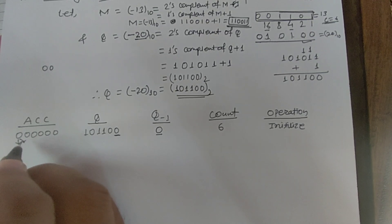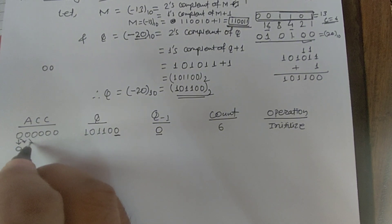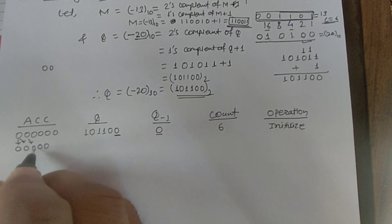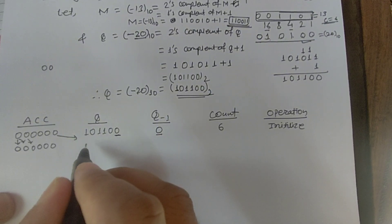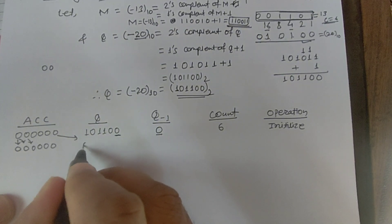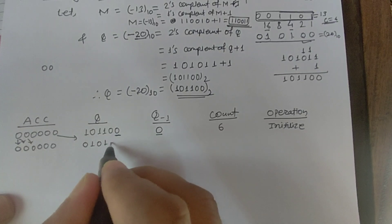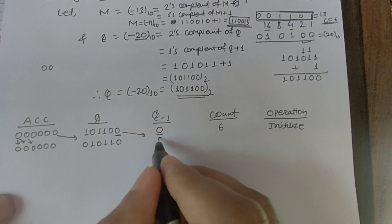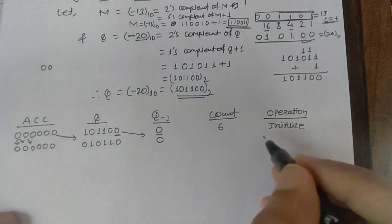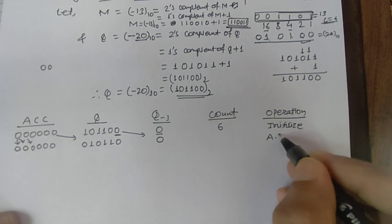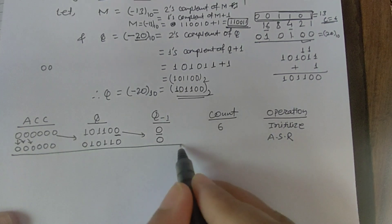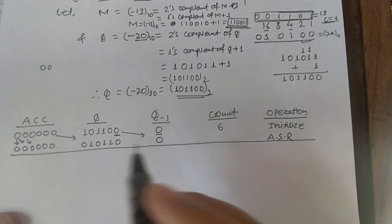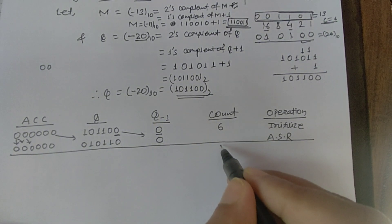Performing ASR: the first bit is preserved as-is, and all bits shift right. The Q register shifts right as well with the last bit of AC moving into Q's MSB. After shifting, this step is complete and count is decremented to 5.